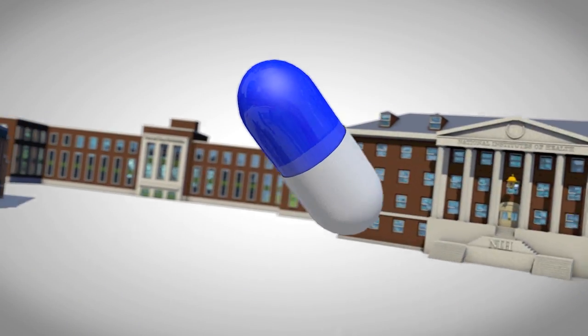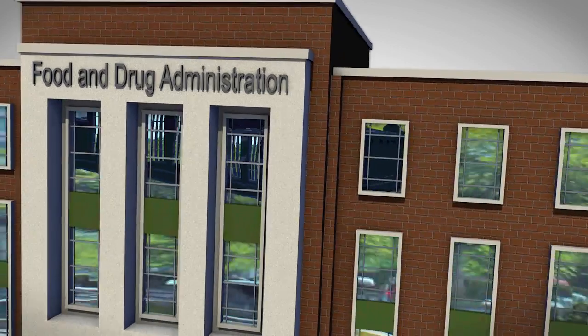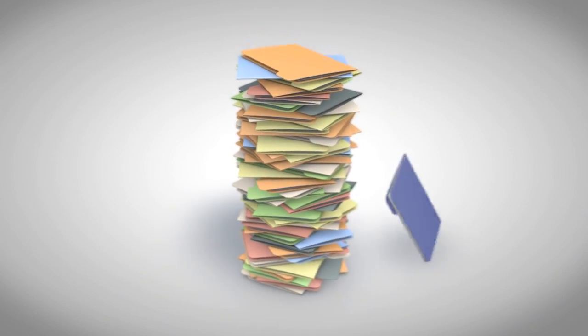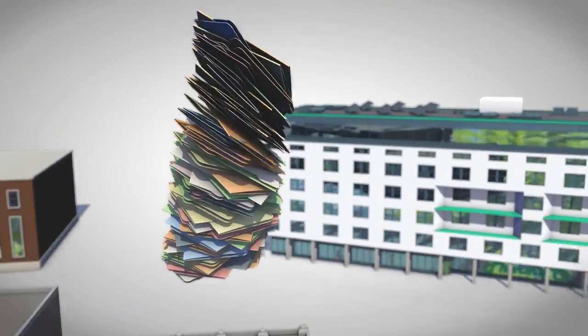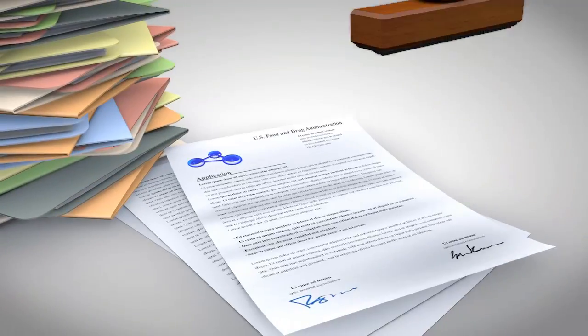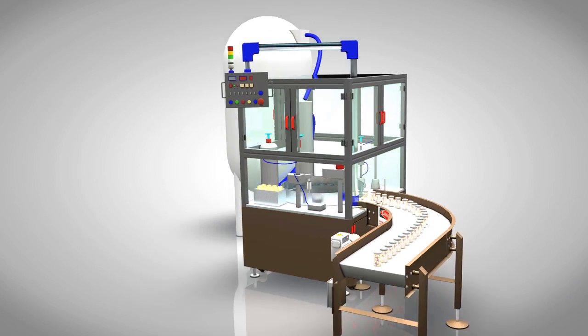If a drug successfully completes Phase III testing, a company will seek permission from the FDA to market the compound. Its application contains data from all the pre-clinical studies and clinical trials, along with information that the FDA will need to make its decision on the drug's safety, efficacy, and quality. If approved, the drug can be manufactured and sold to prevent or treat the disease in question.